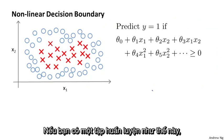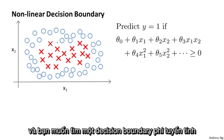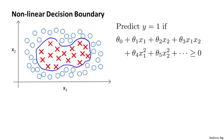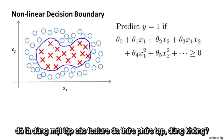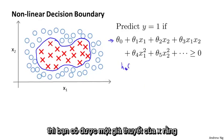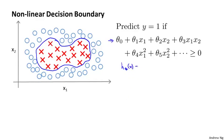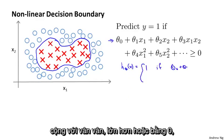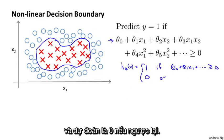If you have a training set that looks like this, and you want to find a nonlinear decision boundary to distinguish the positive and negative examples, maybe a decision boundary that looks like that. One way to do so is to come up with a set of complex polynomial features, so that you end up with a hypothesis x that predicts one if theta zero plus theta one x one plus dot dot dot — all those polynomial features — is greater than zero, and predict zero otherwise.